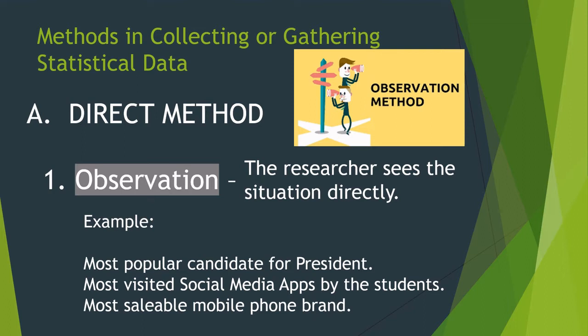What are the methods used in collecting or gathering statistical data? We have the direct method. Under the direct method is observation, wherein the researcher sees the situation directly. We make use of the different human senses in gathering information. For example, the most popular candidate for president — based on what you have observed, who is the most popular? Next, the most visited social media apps by students.